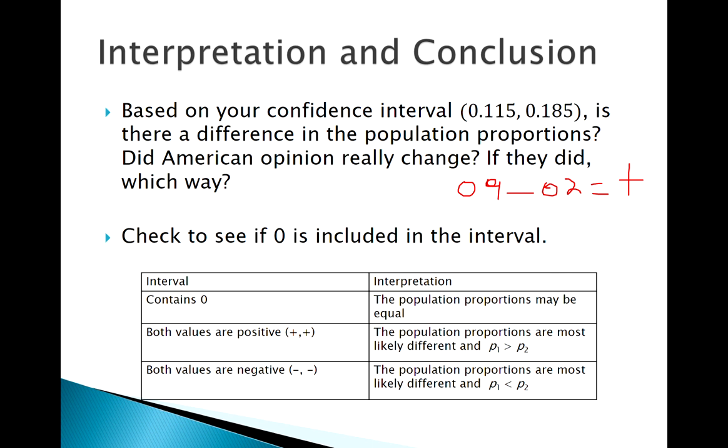If it does not contain zero and they're both positive, that means the one that came first is probably bigger. If it's negative, that means the one that came second is probably bigger.